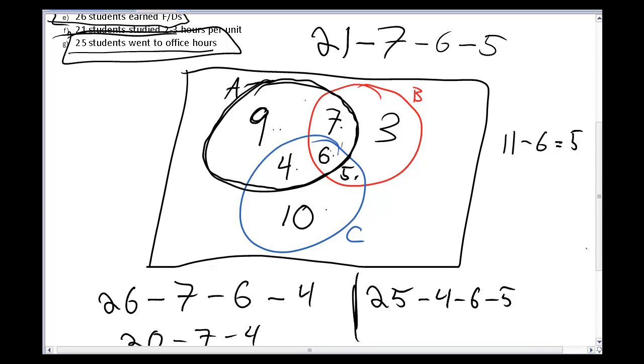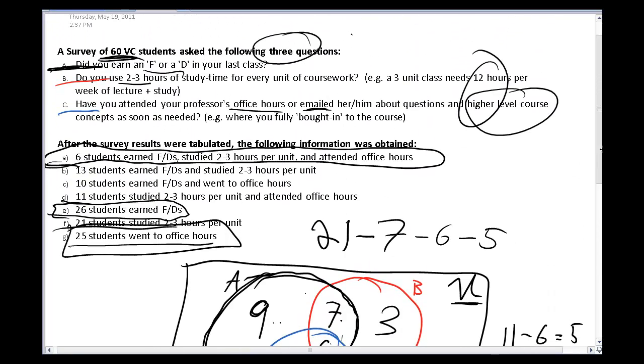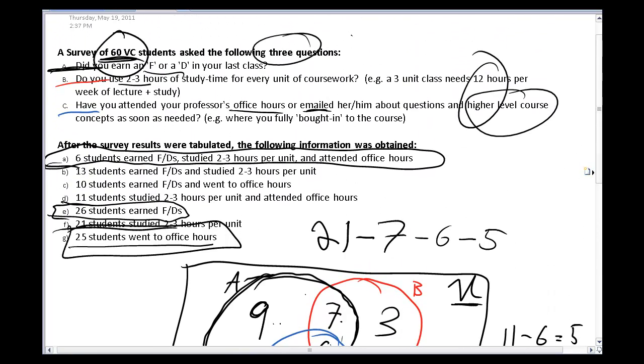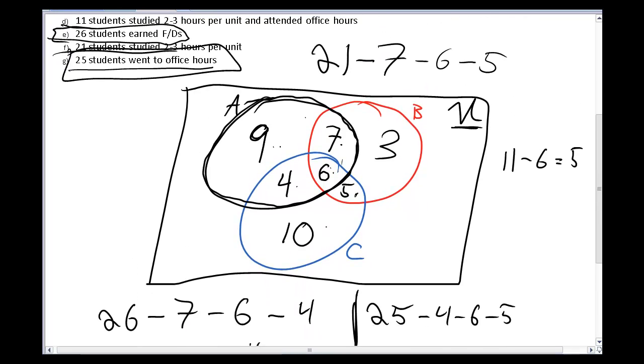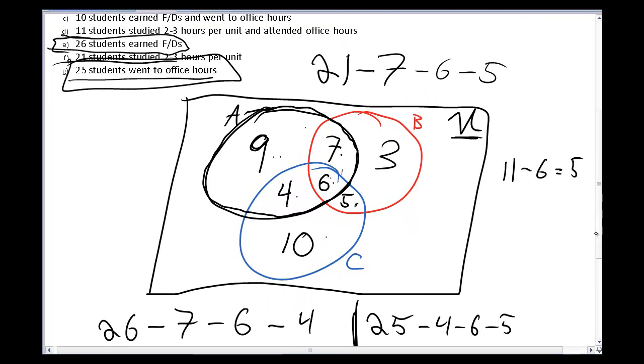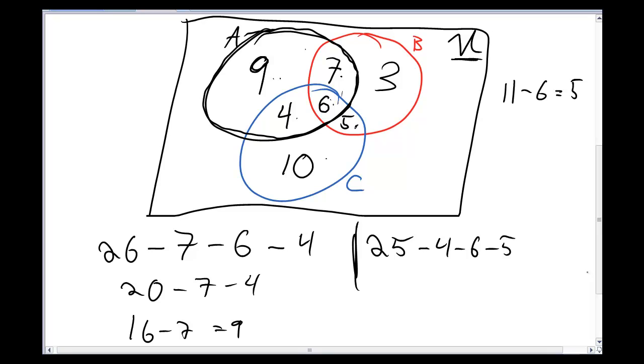So now I've got my Venn diagram all worked out. I'm almost done. I've got one last area to talk about, and that's how many people are in the whole universe. All together, inside this whole box, I had 60 people because I had 60 students all together. To fill in the rest of this box, I have to subtract all the different people from all the different parts.